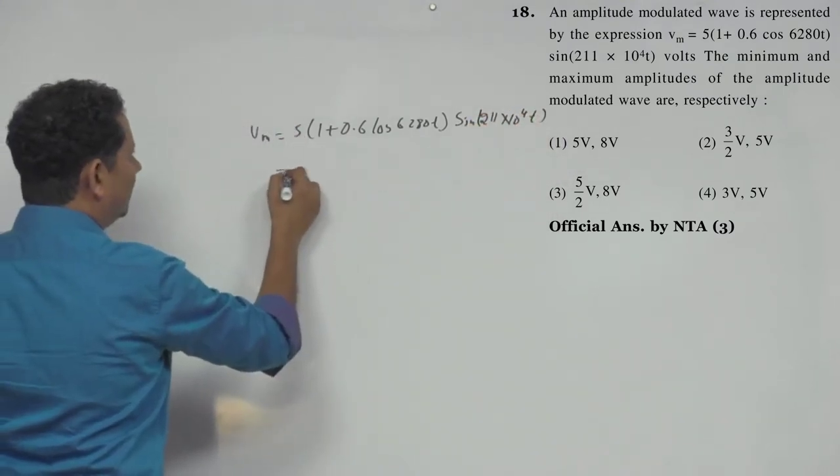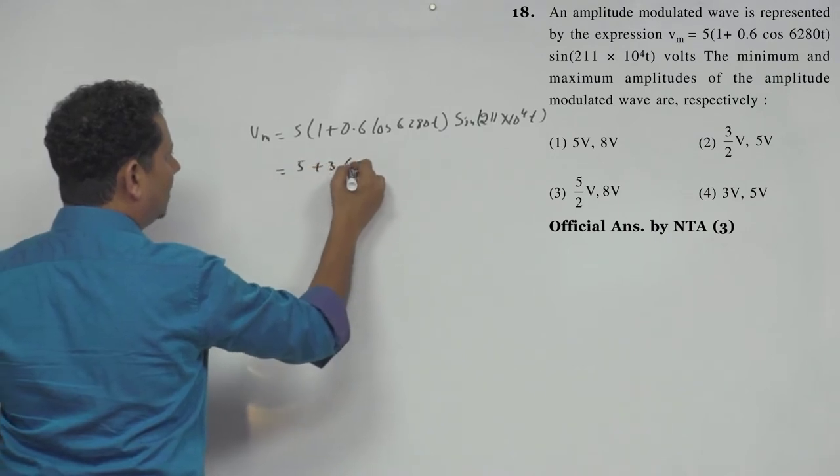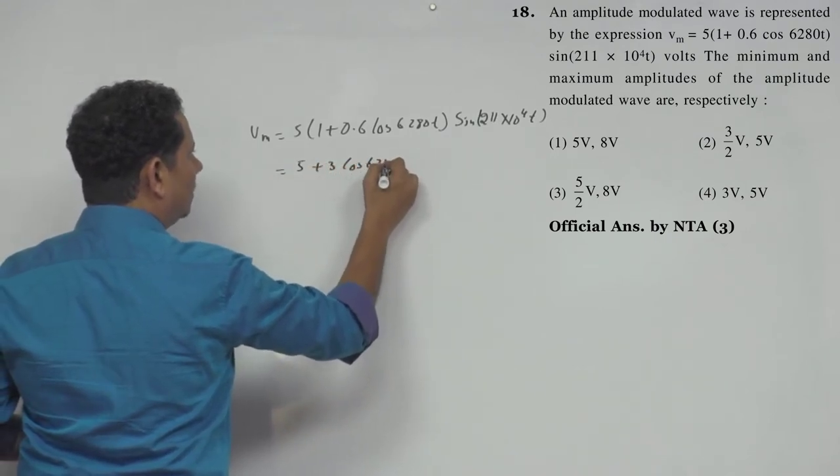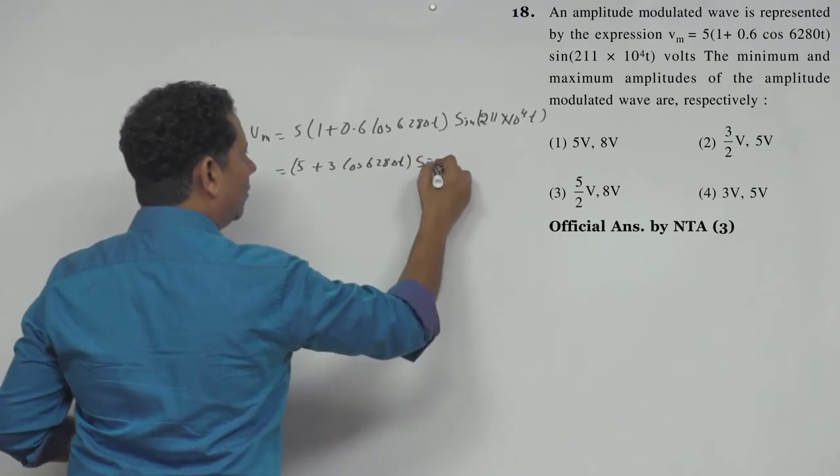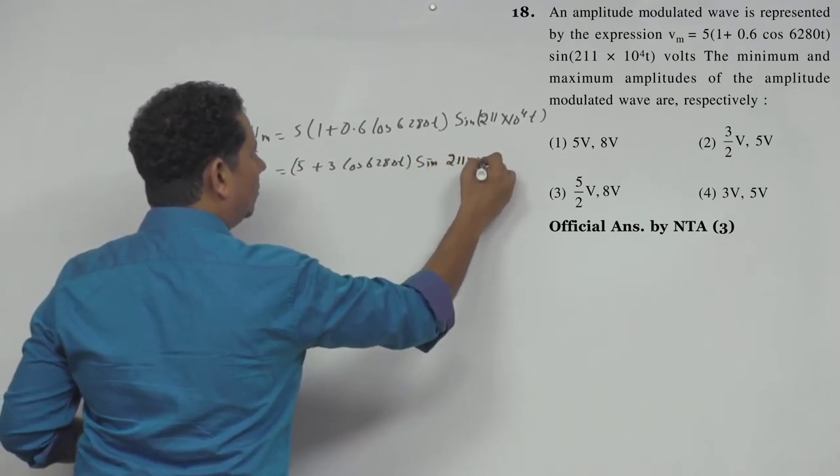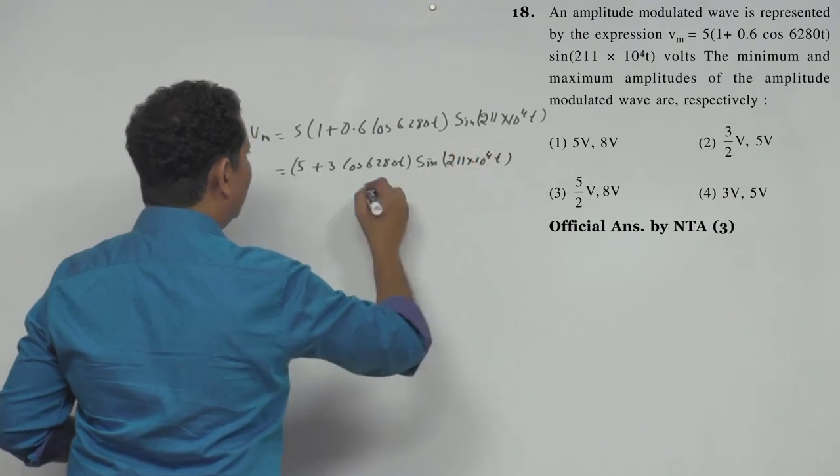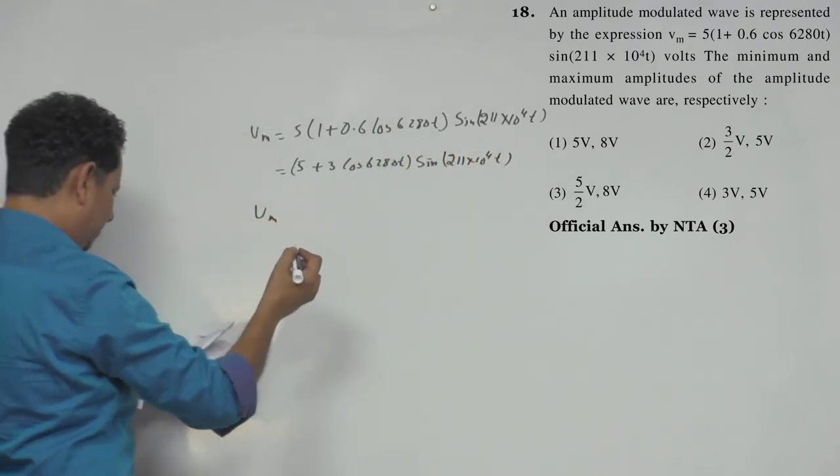The amplitude is 5, so this will be equal to 5 plus 3 cos of 6280t multiplied by sine of 211 into 10 to the power 4t. This expression is now vm. If we talk about maximum value...